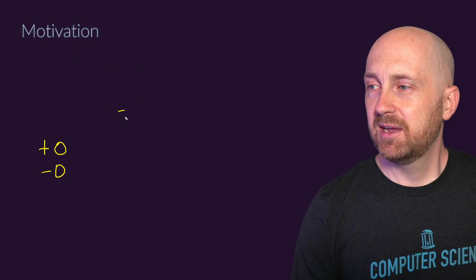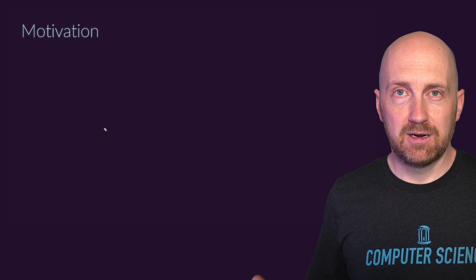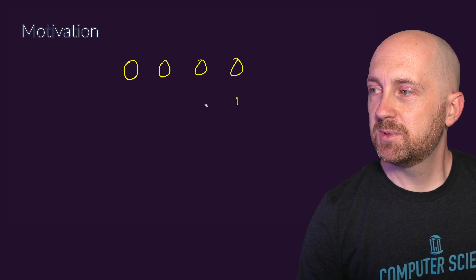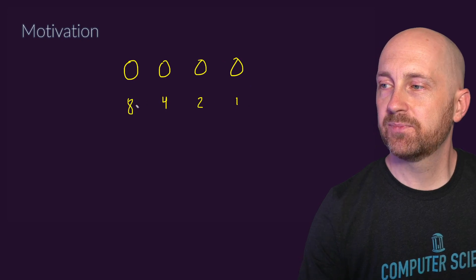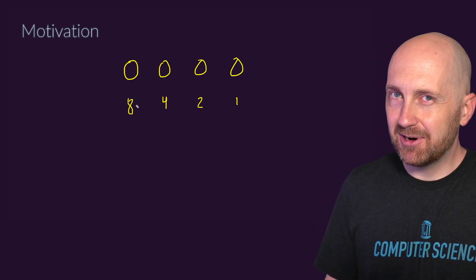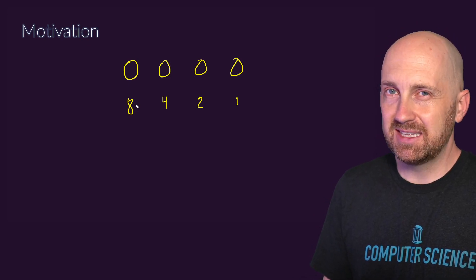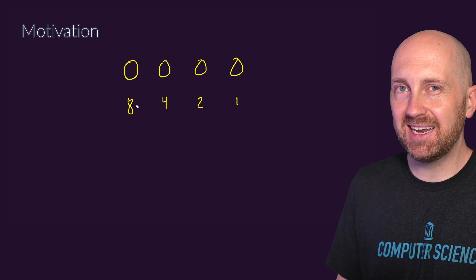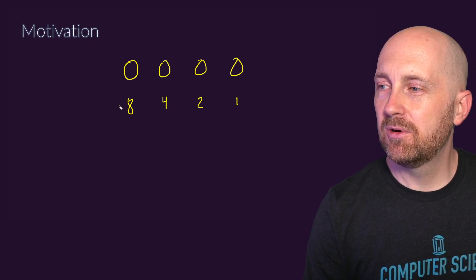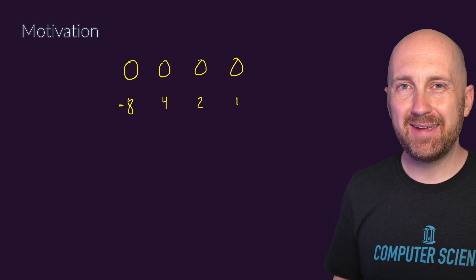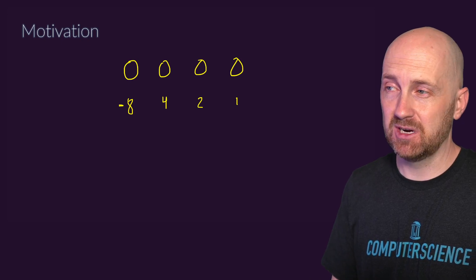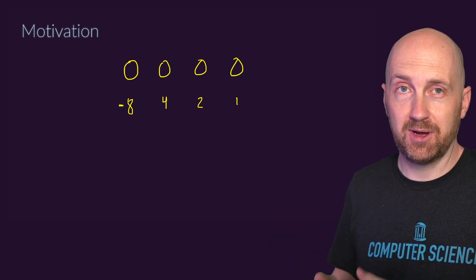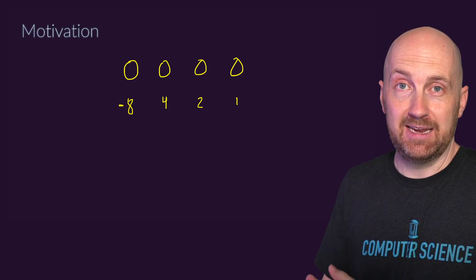So let's take a look at two's complement. The idea is: let's say we have four bits — the one's position, the two's position, the four's position, and the eight's position. This is a very clever design idea, and I want to emphasize that this is a design idea — there were humans involved in deciding how best to use these bits. The design idea behind two's complement is: what if we actually made the high-order bit negative? If we have four bits and the highest-order bit corresponds to the eight's position, we make that value negative eight.